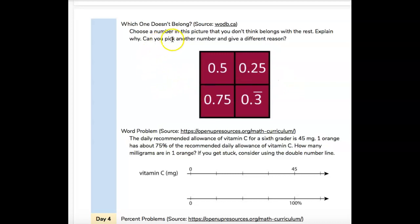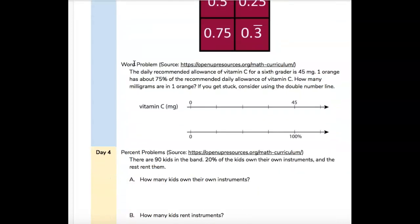So it says, which one doesn't belong? Choose a number in this picture that you don't think belongs with the rest. Explain why. Can you pick another number and give a different reason? All you have to do is pick a number and tell why it doesn't fit in that particular square or set of squares. And then the next problem, word problem.